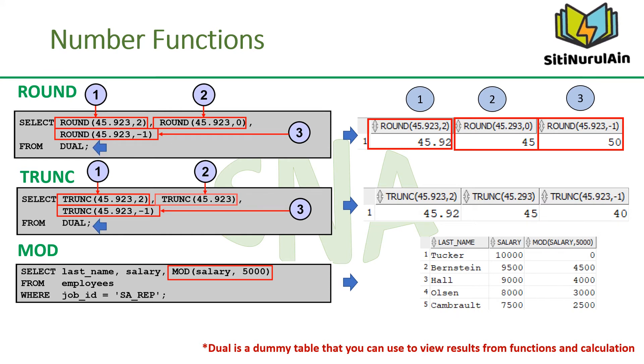DUAL is a dummy table that you can use to view results from functions and calculations. The TRUNC function truncates the column, expression, or value to n decimal places. The TRUNC function works with arguments similar to those of the ROUND function. If the second argument is 0 or is missing, the value is truncated to 0 decimal places. Conversely, if the second argument is -2, the value is truncated to 2 decimal places to the left. If the second argument is -1, the value is truncated to 1 decimal place to the left.